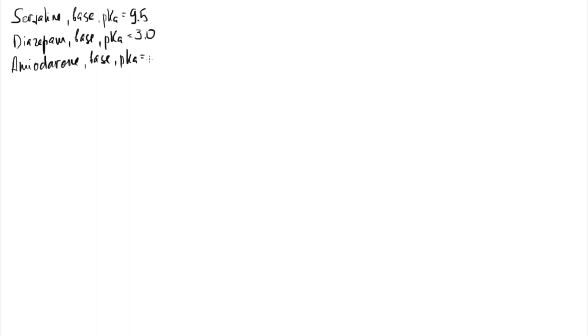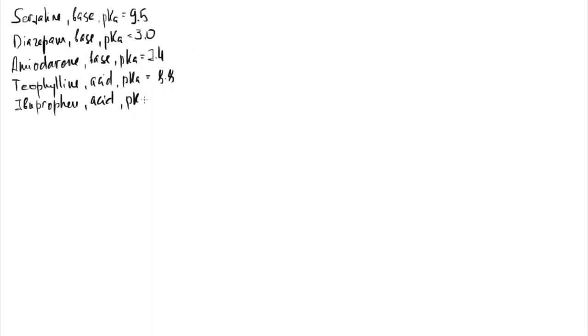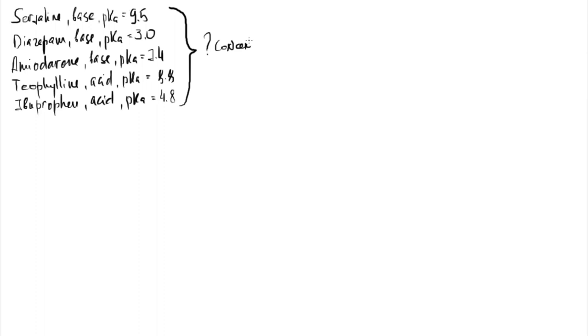Another interesting example: medications taken orally — sertraline (basic drug, pKa 9.5), diazepam (basic drug, pKa 3), amiodarone (weak base, pKa 7.4), theophylline (weak acid, pKa 7.4 — approximated as 8.8 in context), and ibuprofen (weak acid, pKa 4.8). Which of these drugs will be concentrated inside the patient's gastric cells? Note that we don't have an explicit pH value — let's assume stomach pH is 2 or even 1.